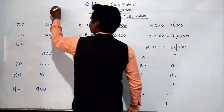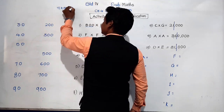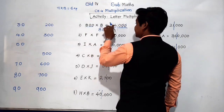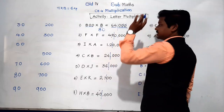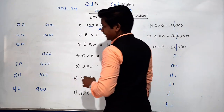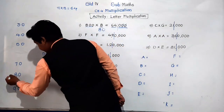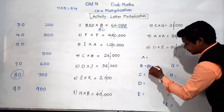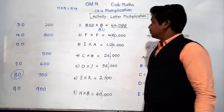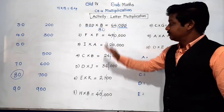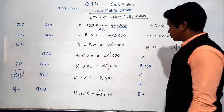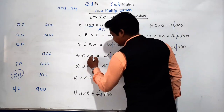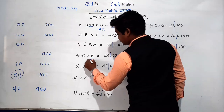8 eights are 64. So the digit in B must be 8. With one zero at the end, B represents 80. We write B = 80. Now we will use this value of B in the other equations where B appears. Looking at C × B = 24,000 — here B = 80.